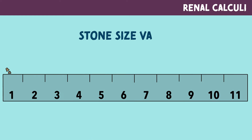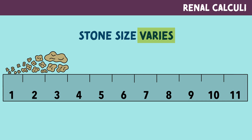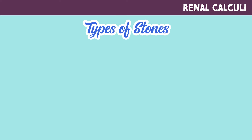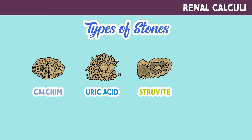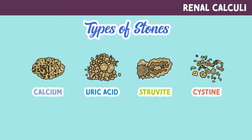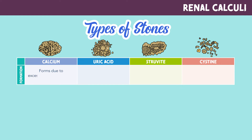Stones can range from being very small to very large. There are also different types of stones — they could be made up of calcium, uric acid, struvite, or cysteine. Calcium stones form due to excess calcium and oxalate in the urine. Uric acid stones form due to excess uric acid in the urine.